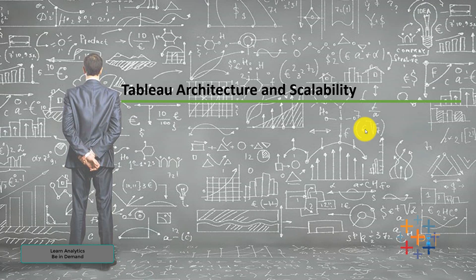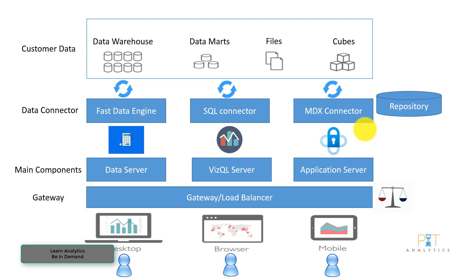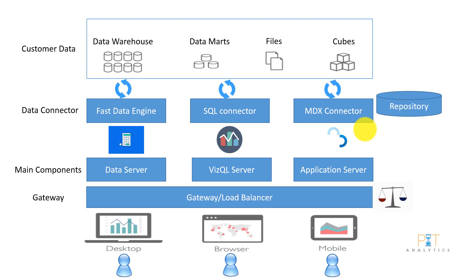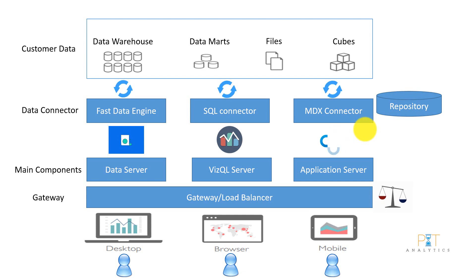Today we will discuss Tableau architecture and scalability. This is a Tableau Server architecture which talks about getting different data from different clients. For example, client XYZ has a data warehouse — I can get data from that to Tableau and do reporting. Similarly, from other clients I may get data from data marts, files, Business Objects, or Cognos cubes.